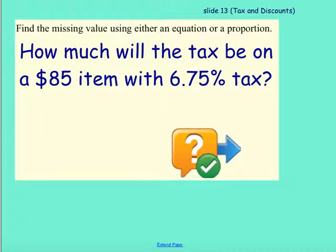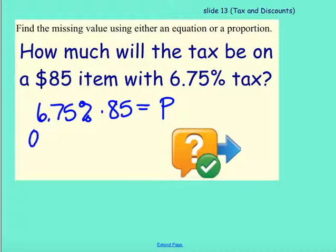I'm just going to do a couple more examples. How much will tax be on an $85 item with 6.75% tax? For me, an equation is probably the easiest for this one. So I'm going to say the part, or the percentage, 6.75% times my whole 85 is going to give me the part that I need to pay for tax. And so I change this into a decimal, 0.0675, remember divide by 100, times 85.